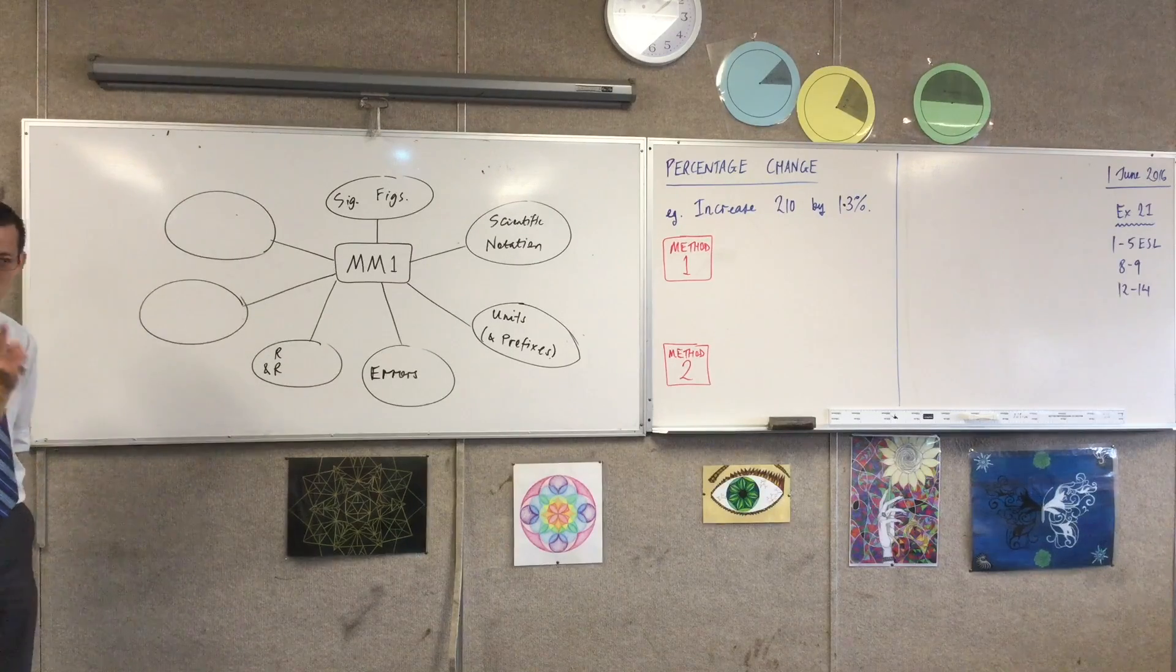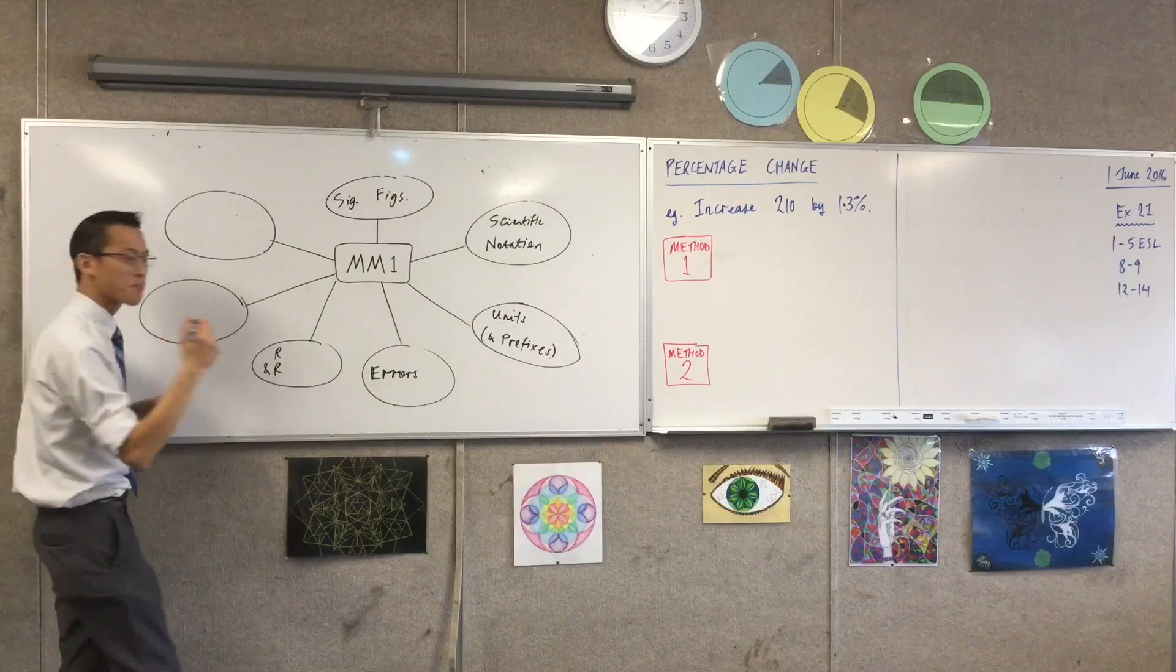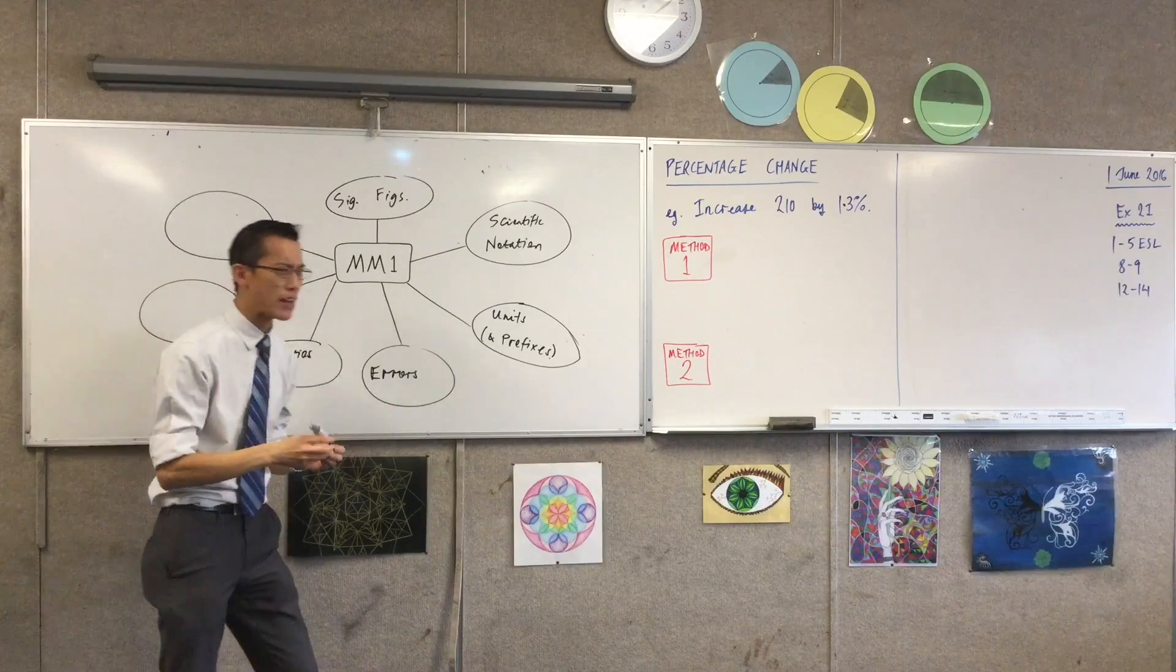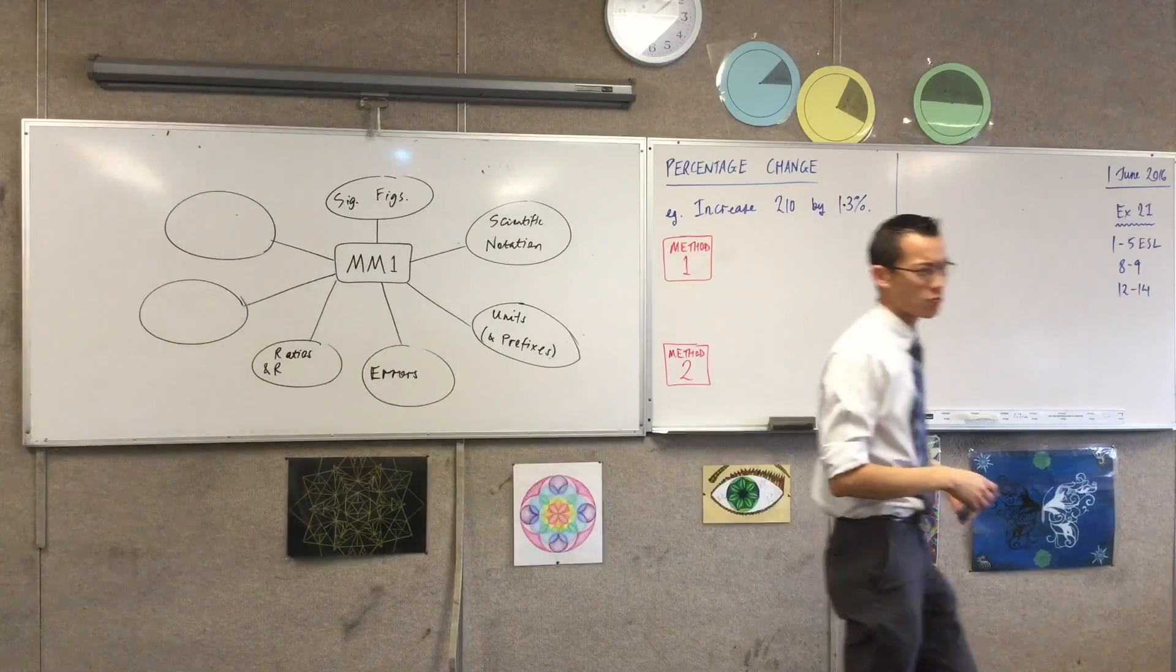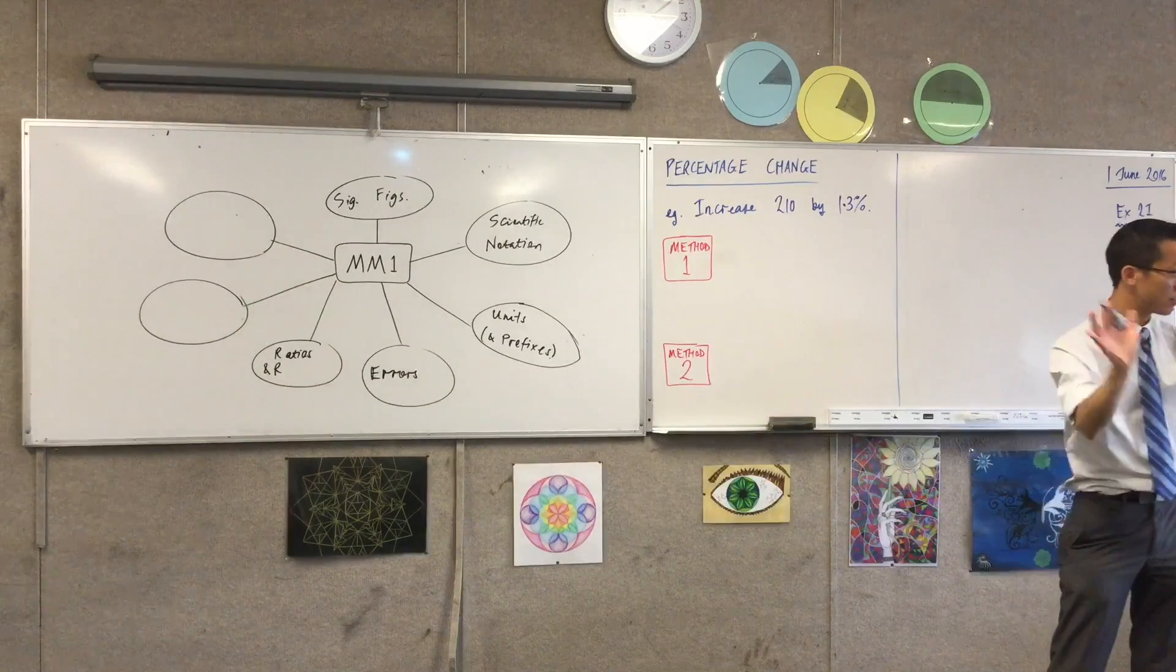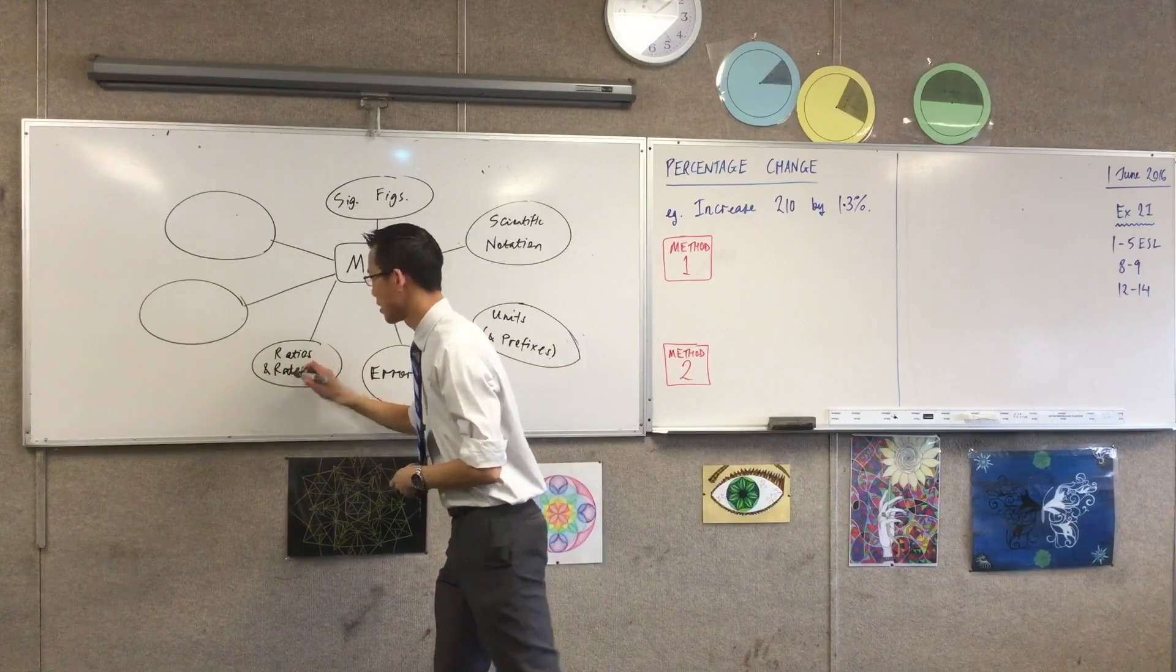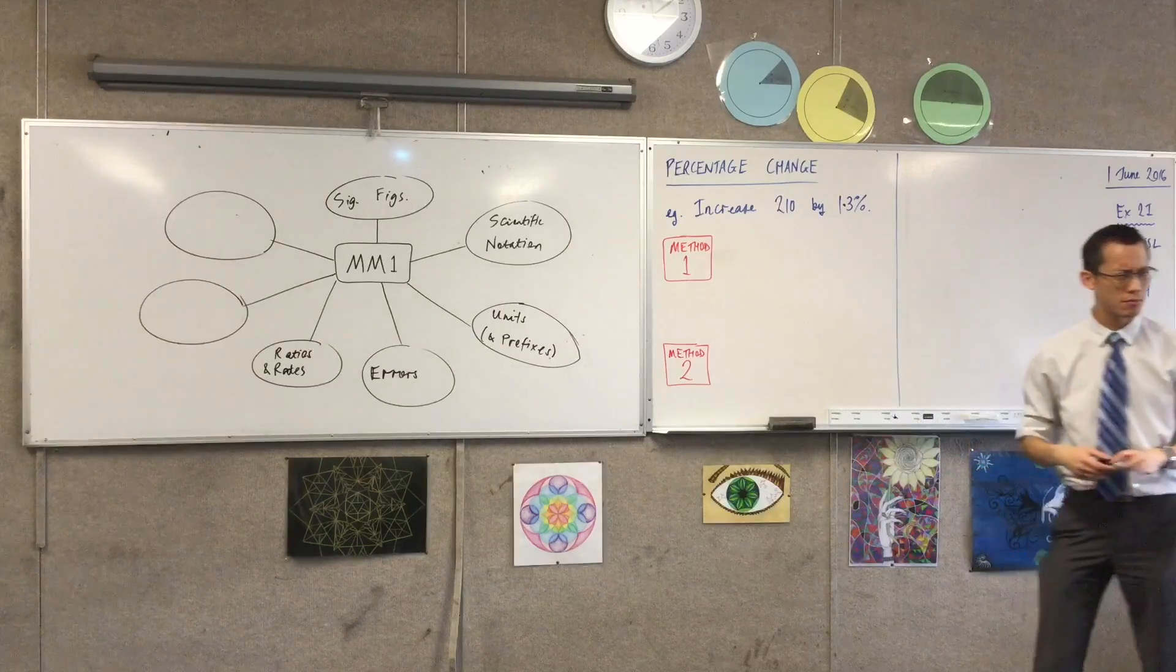Now, the last two concepts that we looked at most recently are ratios. Did we do ratios? We did rates first, actually. I'll just leave that where it is. When you've got more than one quantity, and you're trying to now make a comparison between these two. Ratios and rates are both about multiple quantities. What's the difference between a ratio and a rate? Do you remember?